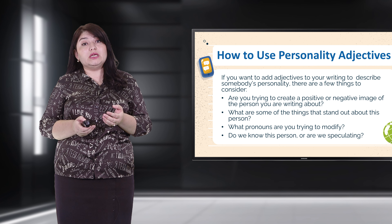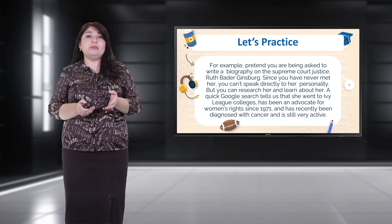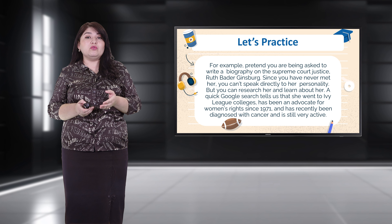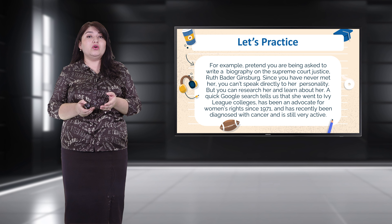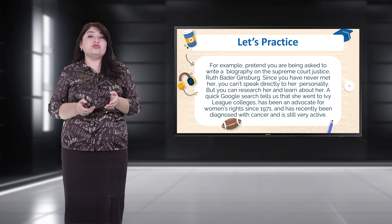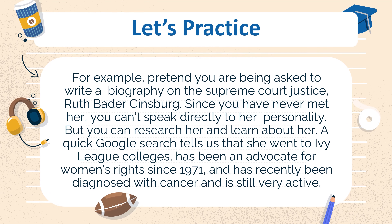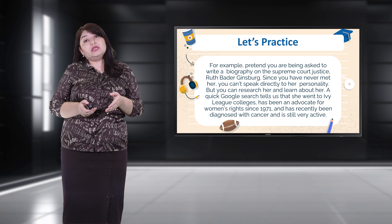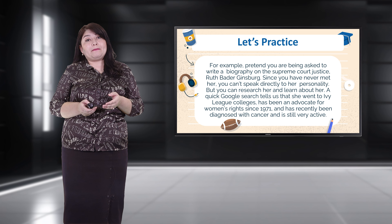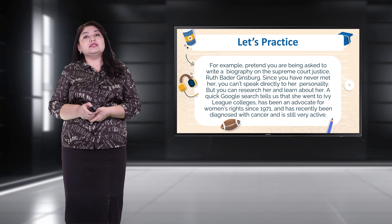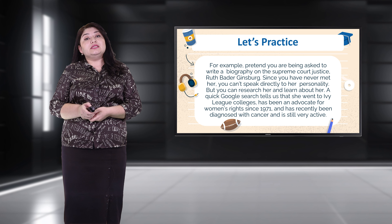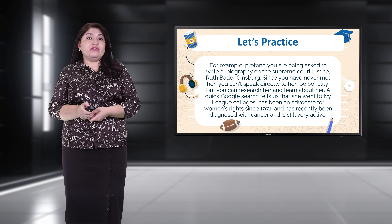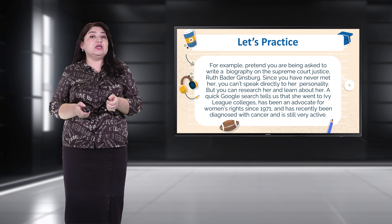Let's practice. Pretend you are being asked to write a biography on Supreme Court Justice Ruth Bader Ginsburg. Since you have never met her, you can't speak directly to her personality, but you can research and learn about her. She attended Rutgers College, has been an advocate for women's rights since 1971, and has recently been diagnosed with cancer. Even without personally knowing her, we can describe her: she seems intelligent, driven, and passionate — she is an advocate and unapologetic about the things she cares about.